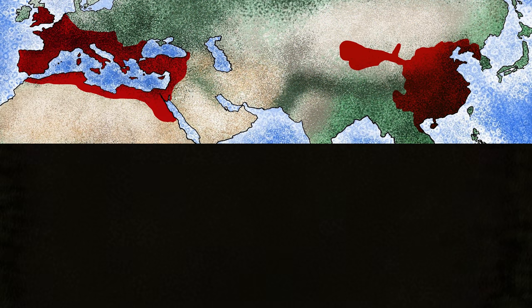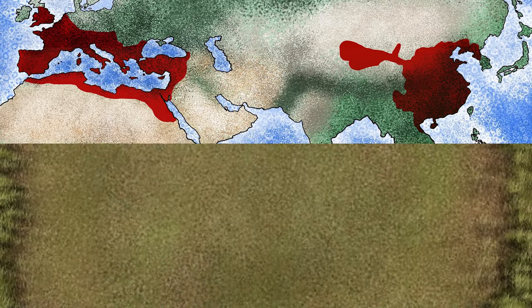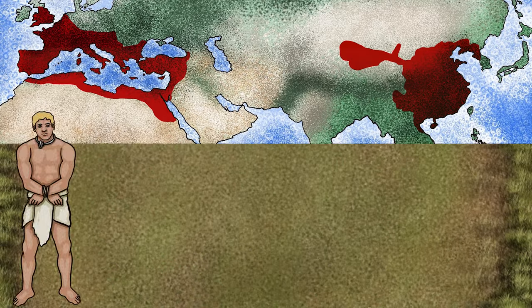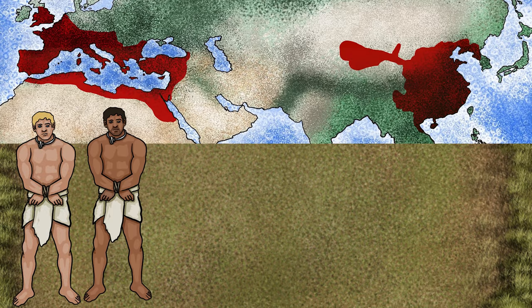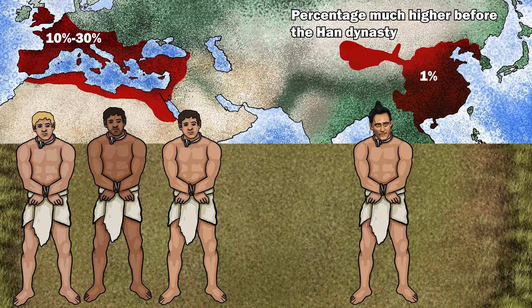One more big difference between the two empires is that the Roman Empire had a lot of slaves. During the height of Rome's power, in a period of time called the Principate, it is estimated that somewhere between 10 and 30 percent of the population of the Roman Empire were slaves. In stark contrast, only around 1 percent of the population of Han China were slaves, and most of those slaves were enslaved because they were criminals.